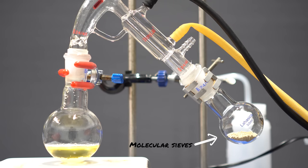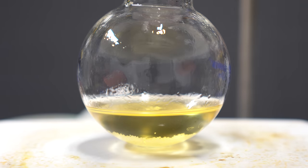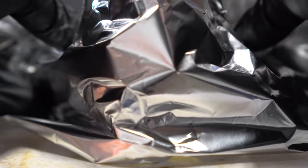I then set up for a simple distillation, with some molecular sieves in the receiving flask. This way, I could just dry everything as it comes over, and it would just make my life a lot easier. Again, I wrapped everything in aluminum foil, and I waited for it to boil.